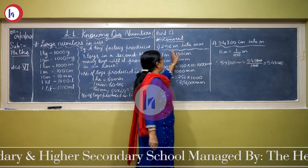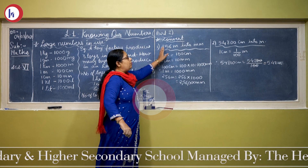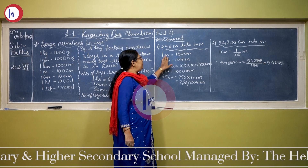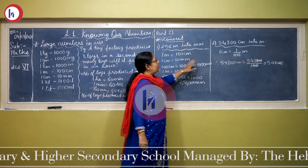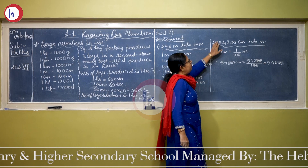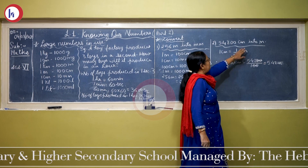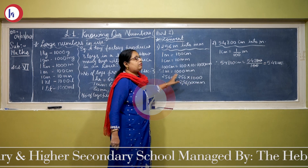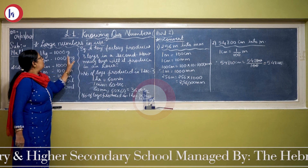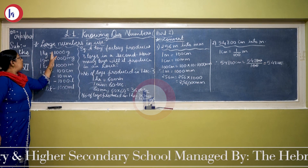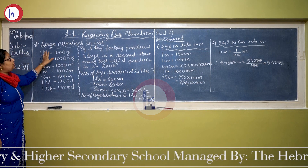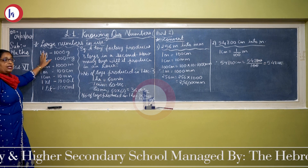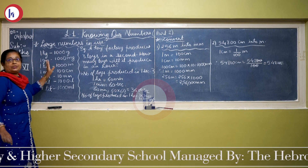Always remember: when we are doing the conversion from a greater number to a smaller number, we always do multiplication, and when going from a smaller number to a greater number, we always divide. I hope you have understood the conversion of these large numbers.